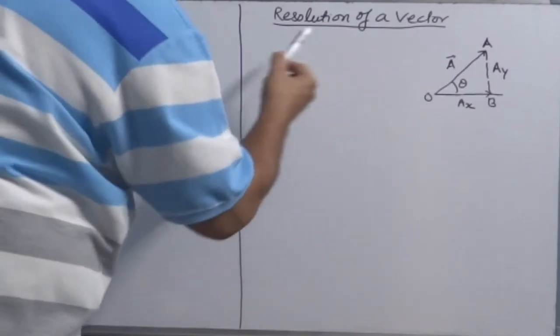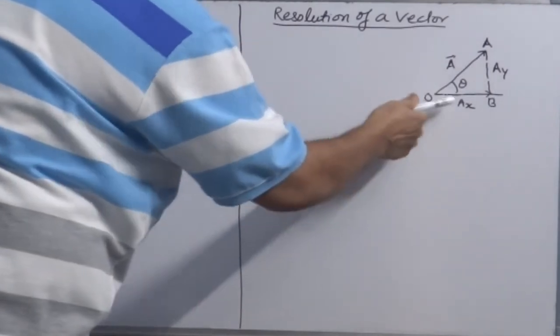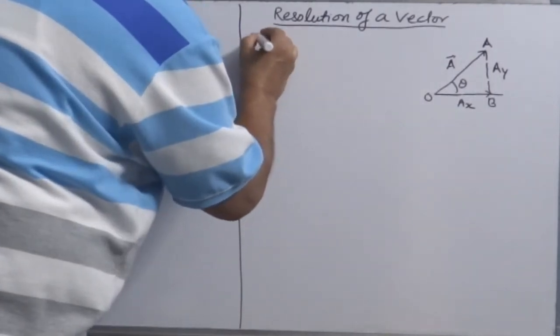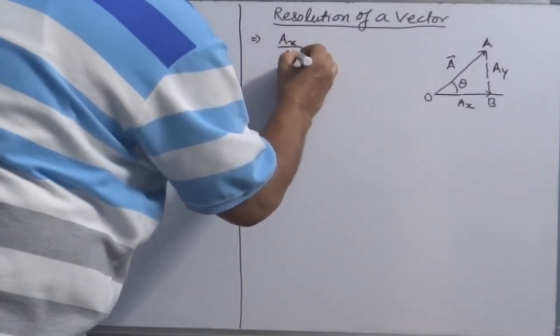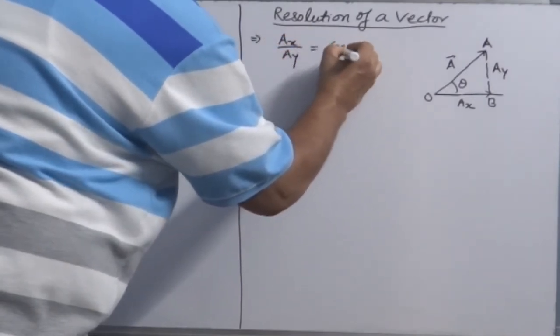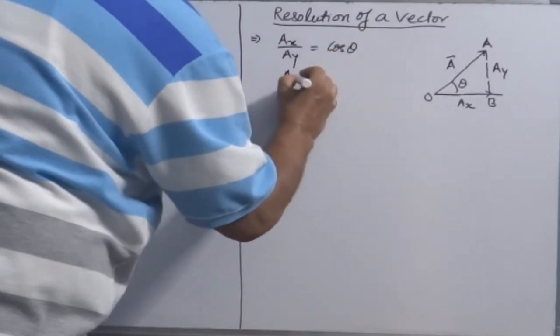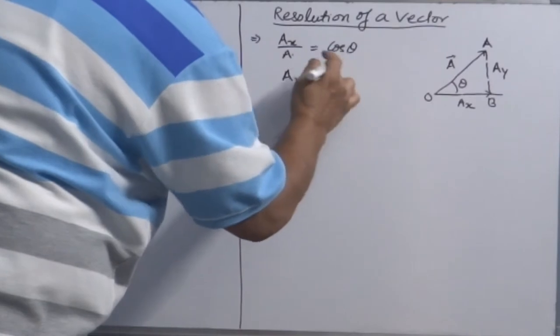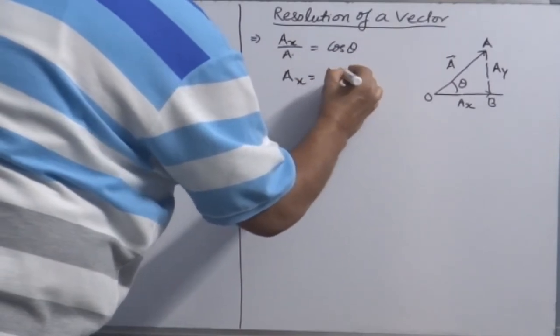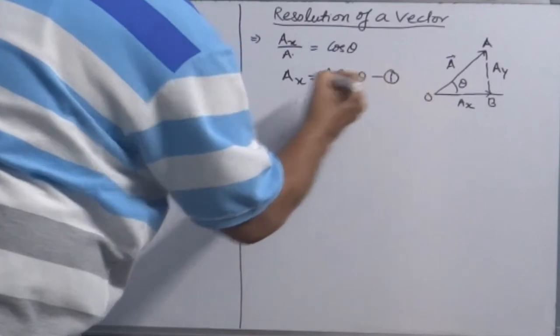Why can we say so easily? Because it is strictly obeying vector laws or triangle law of vector addition. So if we follow trigonometrical rules, this is base, Ax is base. Ax over A is equal to cos theta. Therefore, Ax is equal to A cos theta.